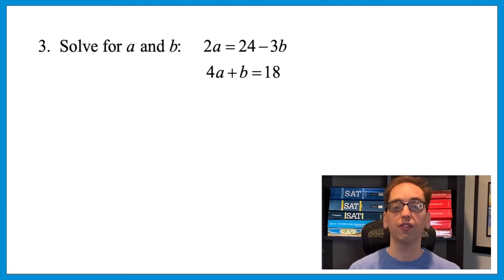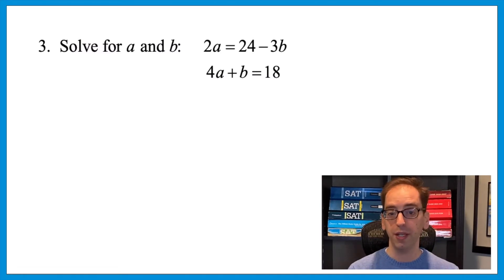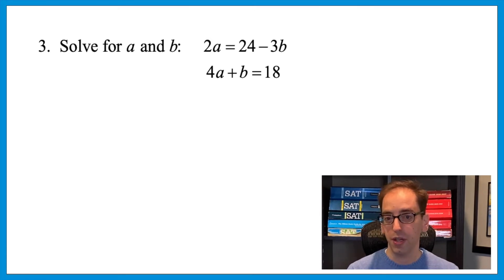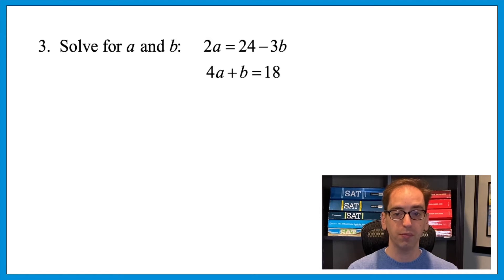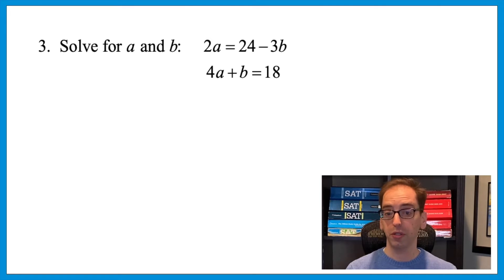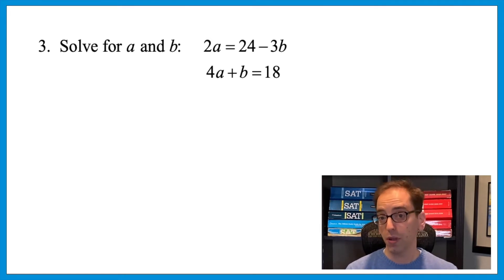Here's another variation: solve for a and b — 2a equals 24 minus 3b, and 4a plus b equals 18. We can't use the previous approach because these expressions are not set equal to the same term. There are actually two approaches: substitution and elimination. Let's start with substitution on two questions, then come back to elimination.